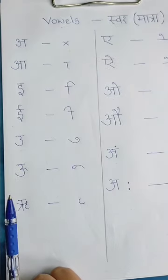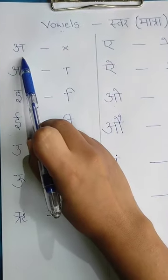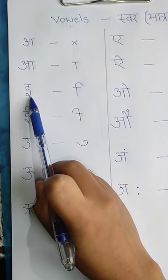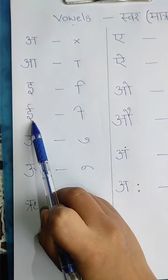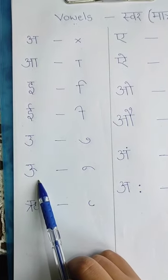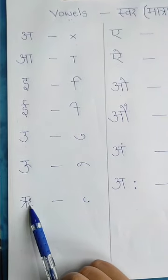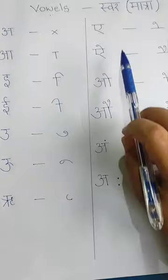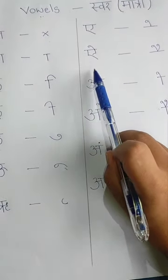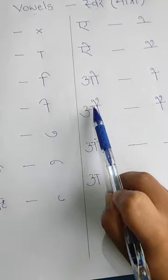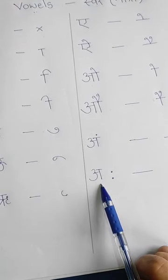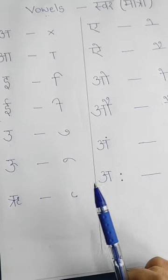Okay, so students, listen carefully. The Hindi vowels are: A, A, I, I, U, U, R, E, A, O, A, O, A, A.